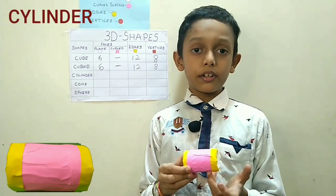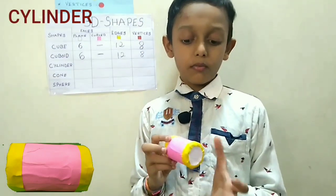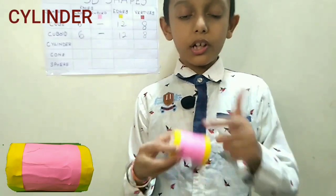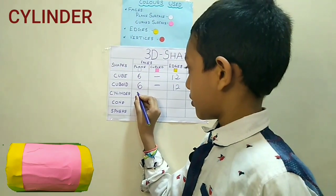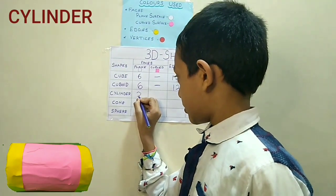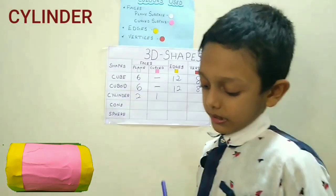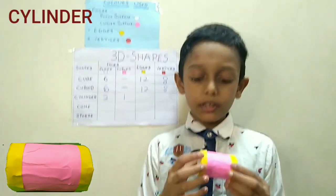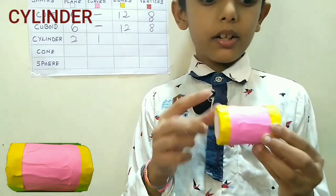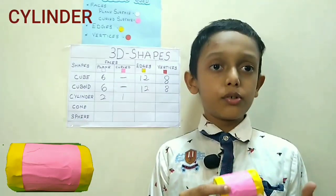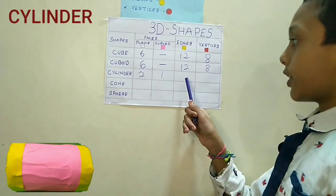I took a cylinder. Now let's count the faces of the cylinder. 1, 2, 3. So there are 2 plain faces and 1 curved face in the cylinder. Now we will count the edges of the cylinder. 1, 2. So there are 2 edges in the cylinder. We will write here 2.